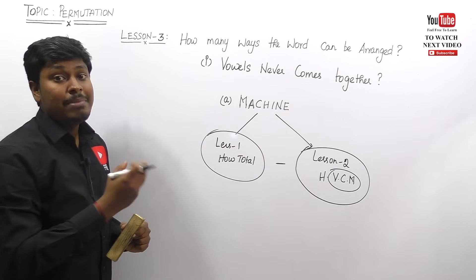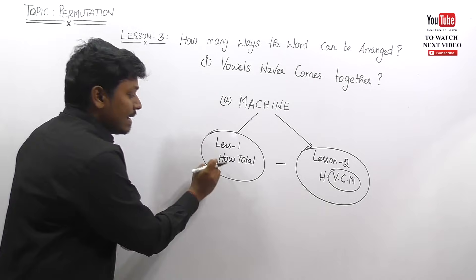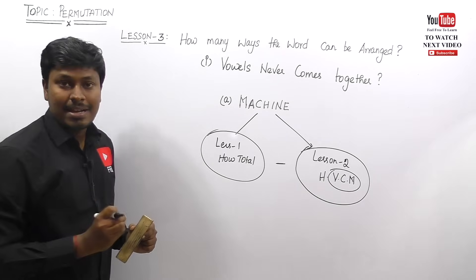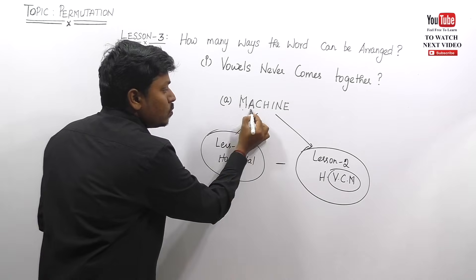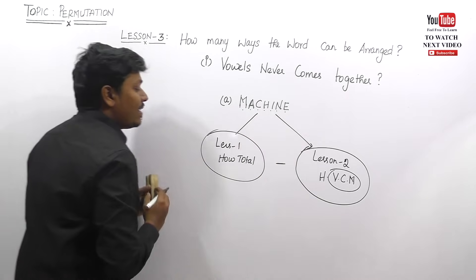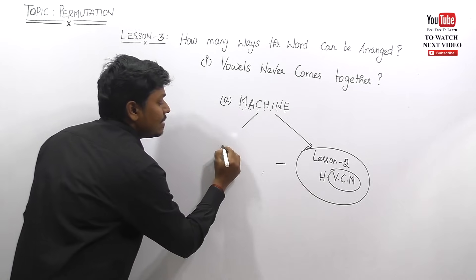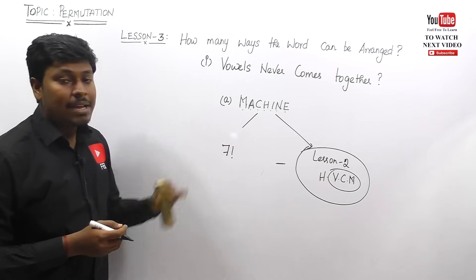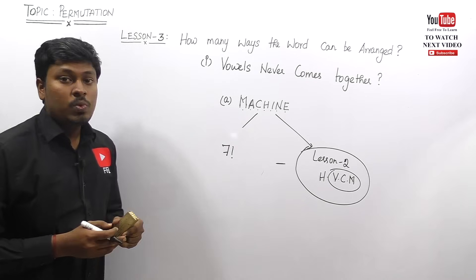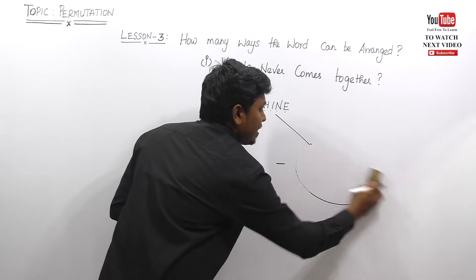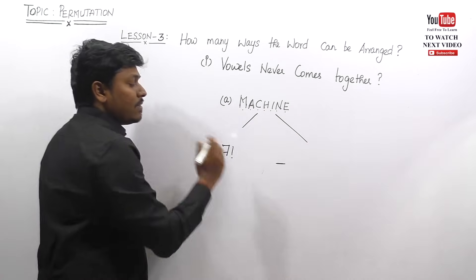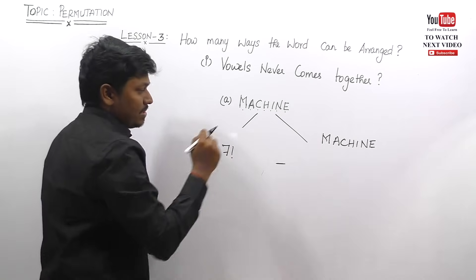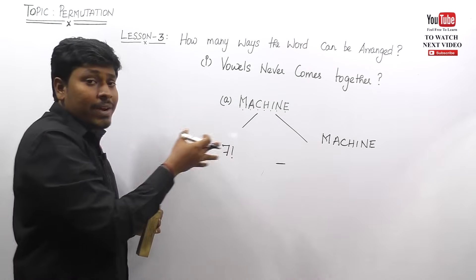They have given the word MISSION, and we need to find how many ways it can be arranged such that vowels never come together. From lesson one, we count how many letters are there: one, two, three, four, five, six, seven — so we write this as seven factorial. Seven factorial is the total number of ways the word MISSION can be arranged.